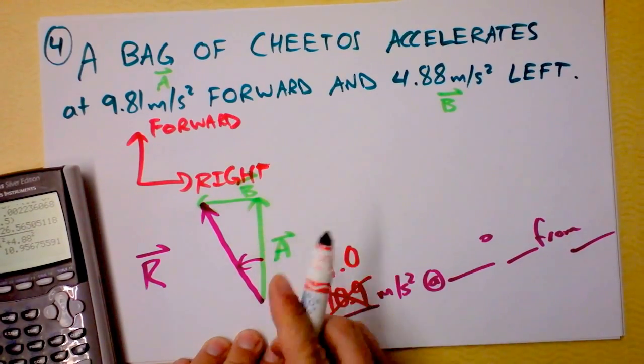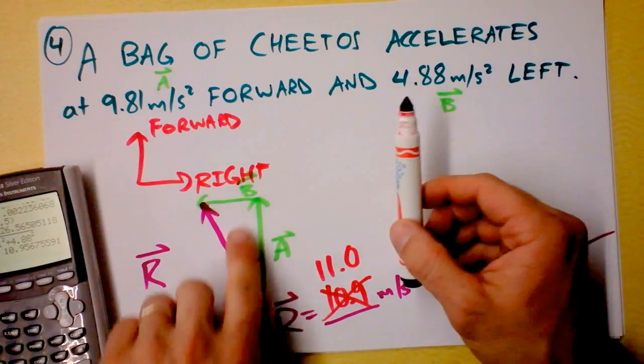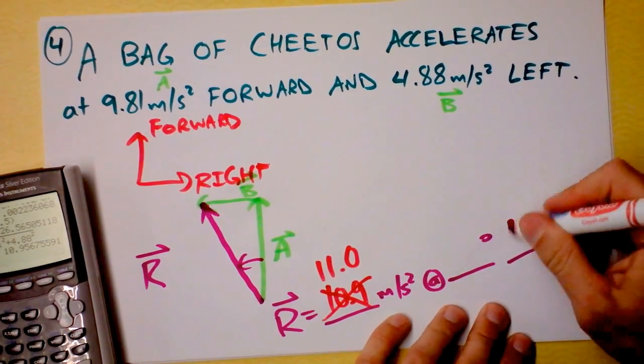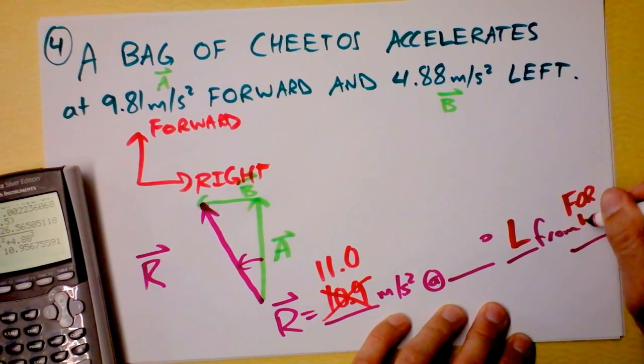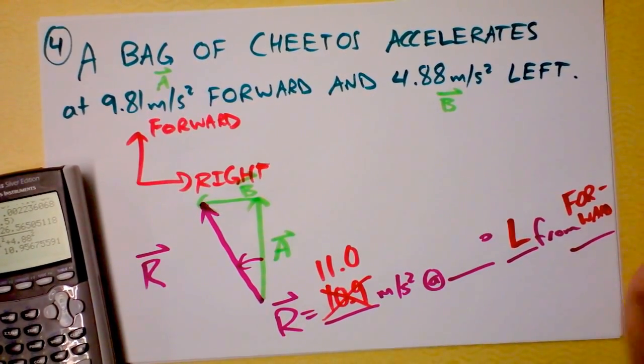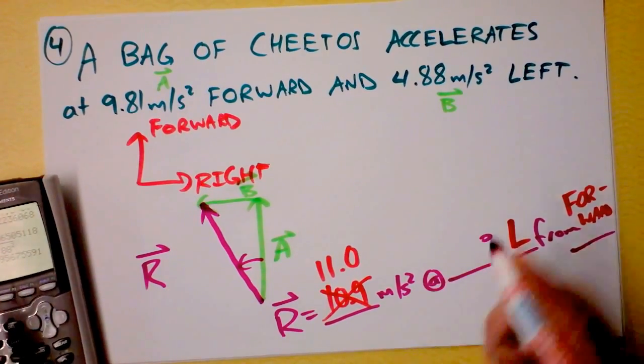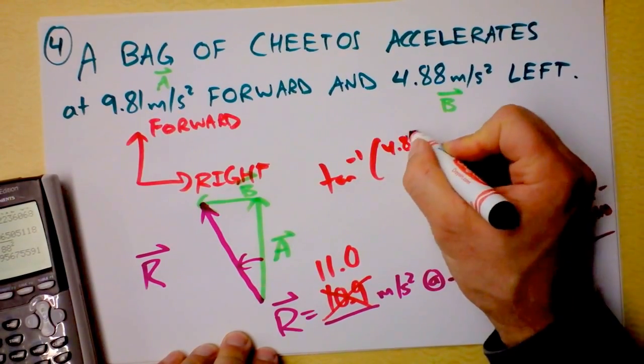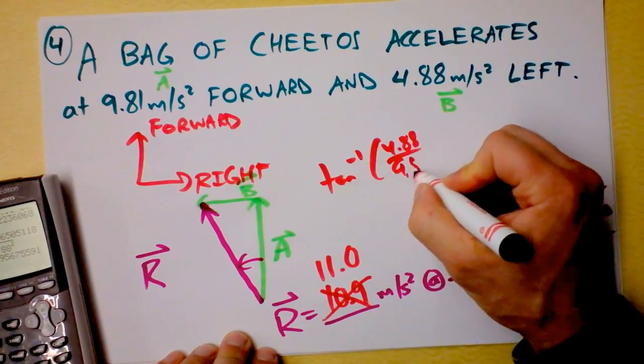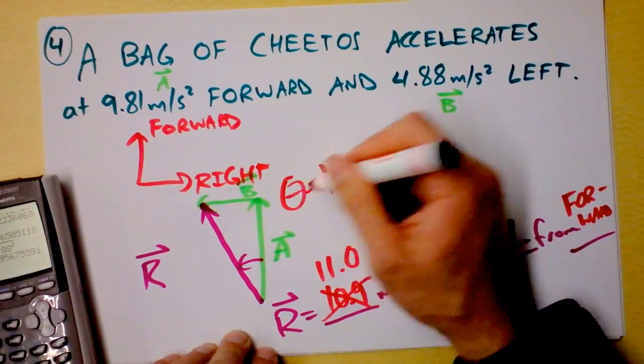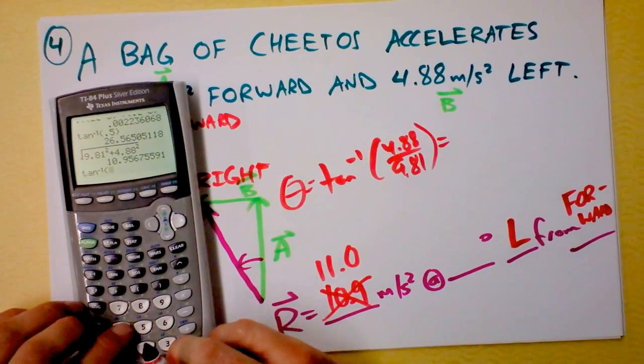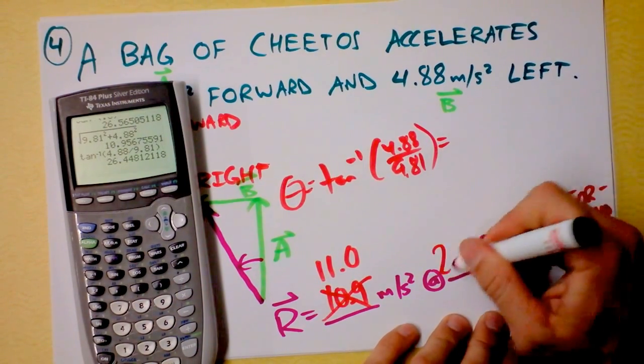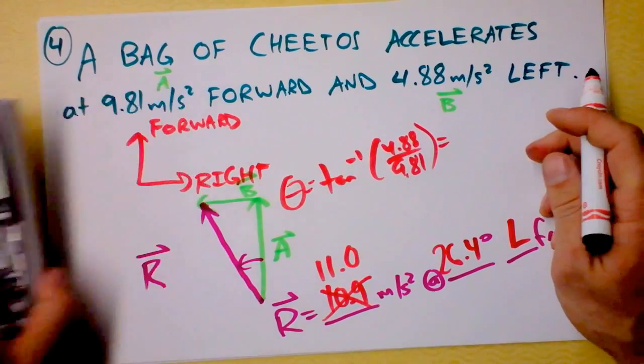And then I have to find this angle. This angle is the angle away from that direction, which is forward. So this is left of forward. See that? It'd be like you turn to left. Left from forward. But I'm trying to find this angle, and I have to take the inverse tangent of the opposite side, which is B, that's opposite of the inverse tangent of 4.88 divided by 9.81. And that's going to get me theta, so let's do that math right there. The inverse tangent of 4.88 divided by 9.81 is I get 26.4 degrees. See ya!